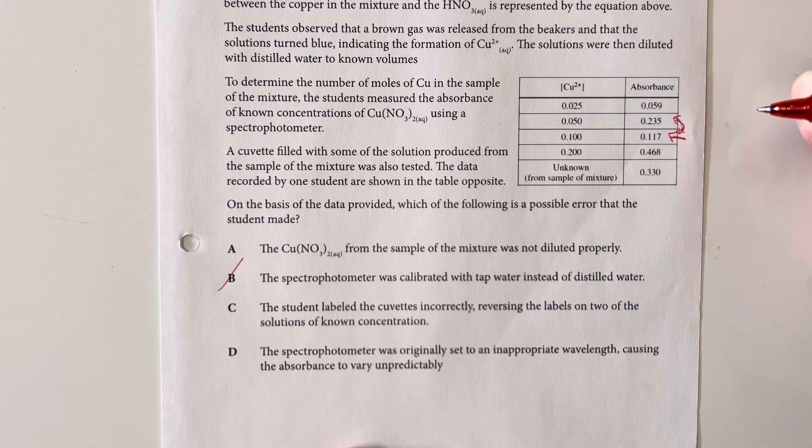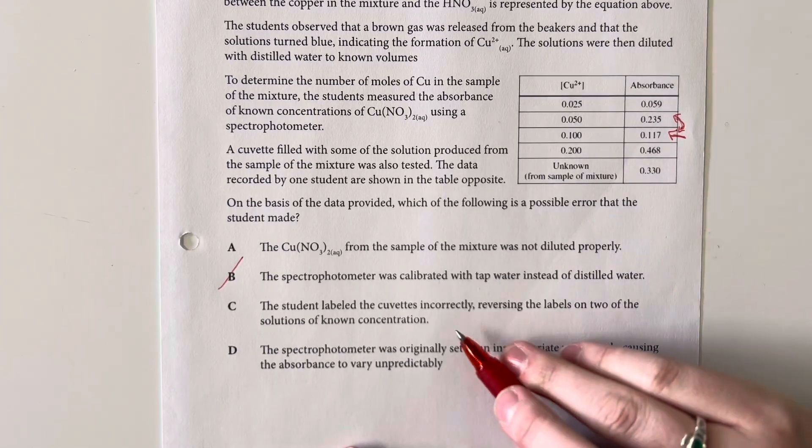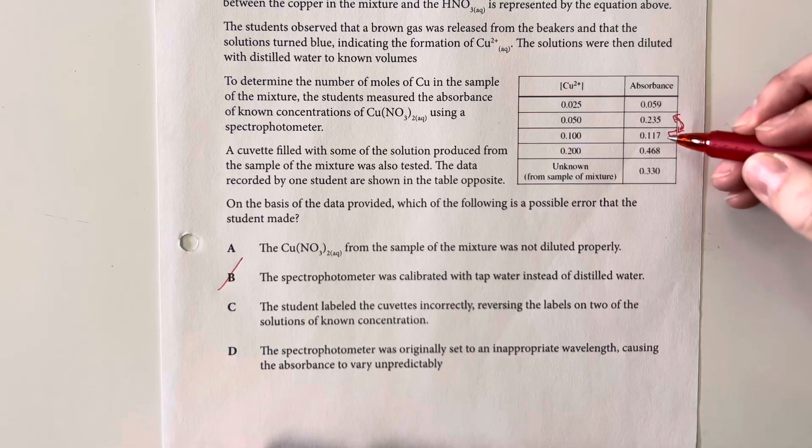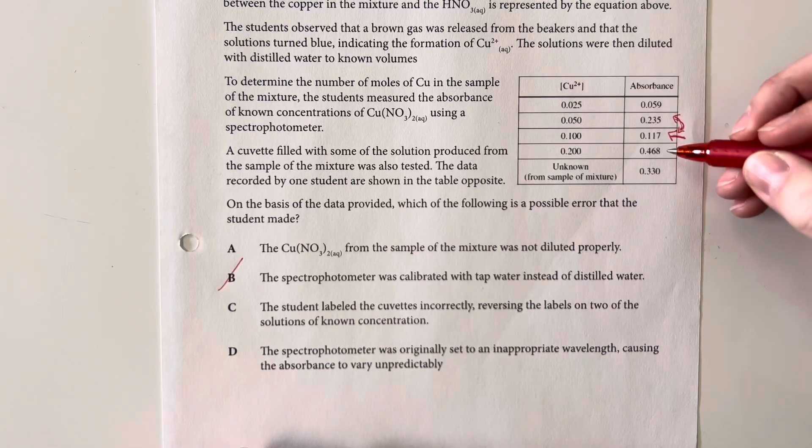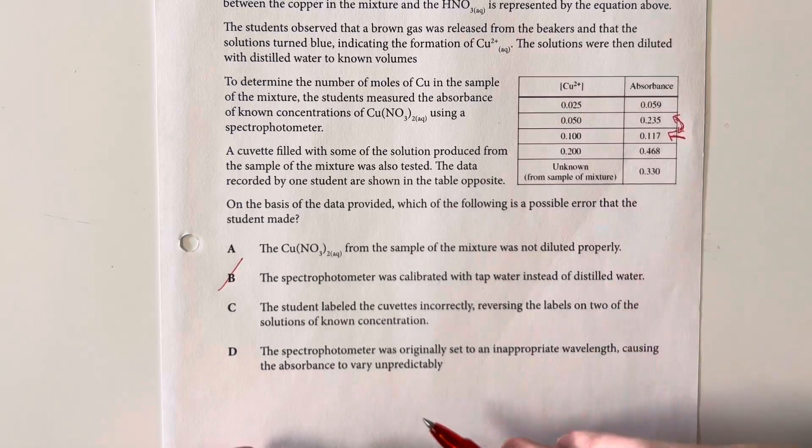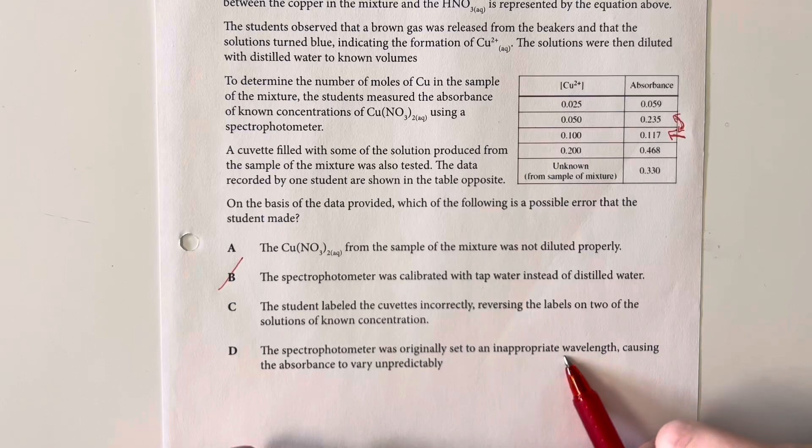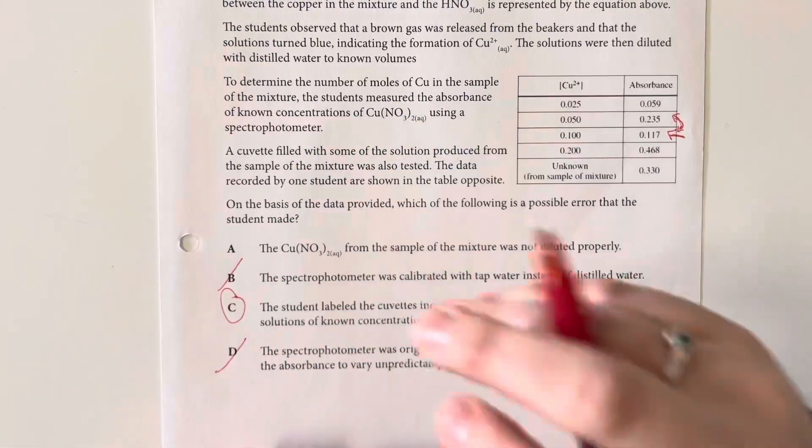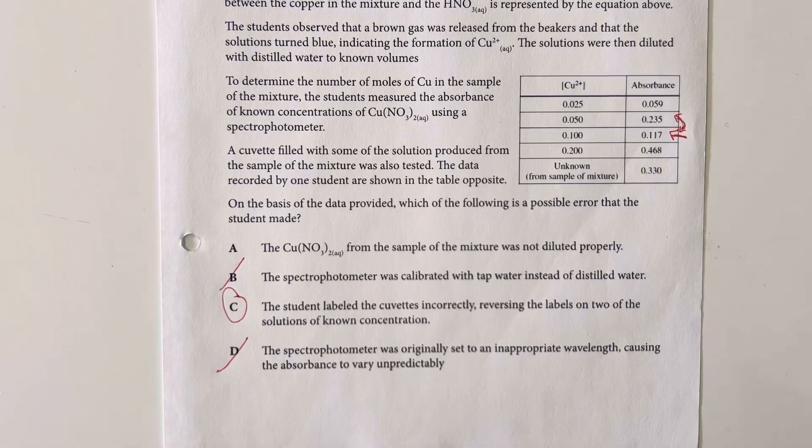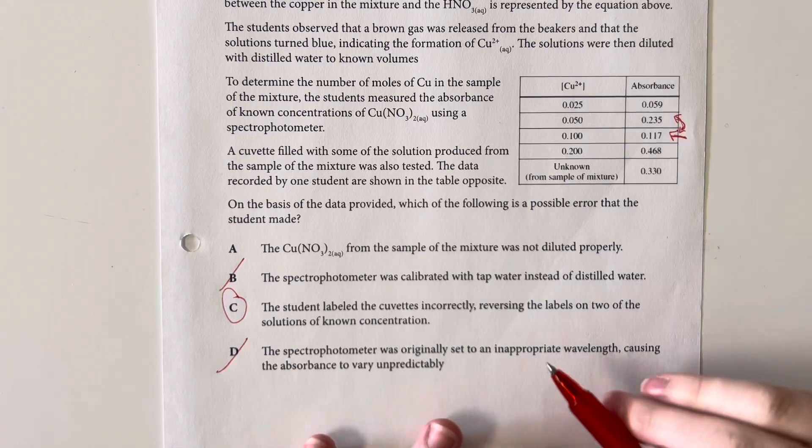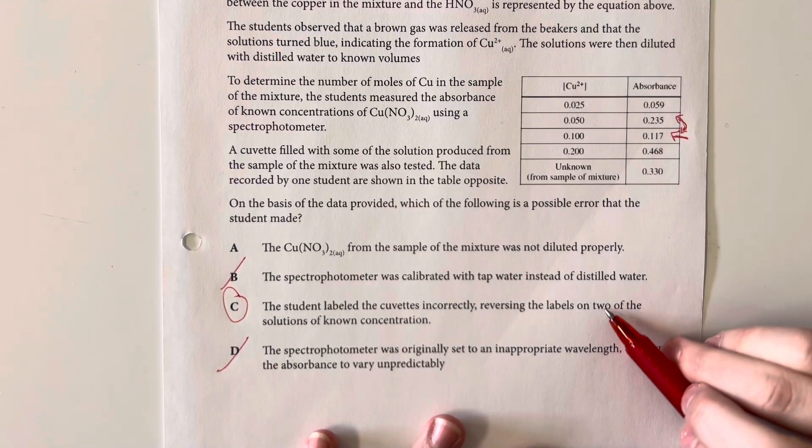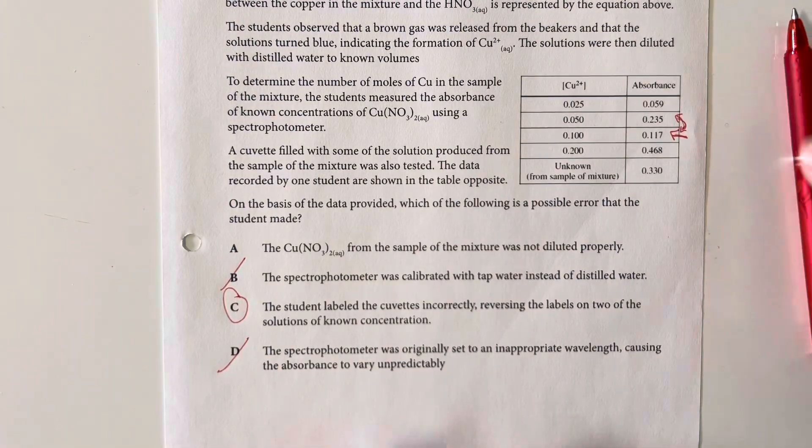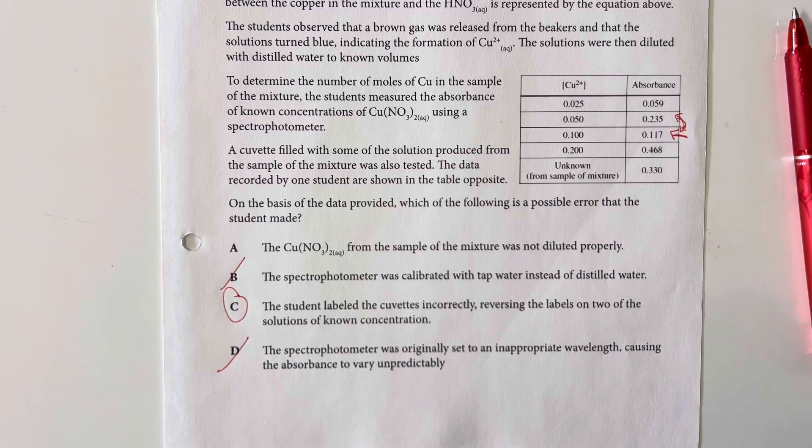The student labeled the cuvettes incorrectly, reversing the labels of two solutions of known concentration. Now, this is something that seems pretty reasonable since these two seem to be inversed and aren't following the approximate doubling of absorbance that we had been seeing or expected to see. So that seems pretty reasonable. And then finally, the spectrophotometer was originally set with an inappropriate wavelength, causing the absorbance to vary unpredictably. If we have the same wavelength throughout, the absorbance will still go through. It just won't be the maximum absorbance. However, the reversing of these two labels is a pretty reasonable expectation since these two absorbances seem to be reversed and are not following the approximate doubling of absorbance that we would have expected.